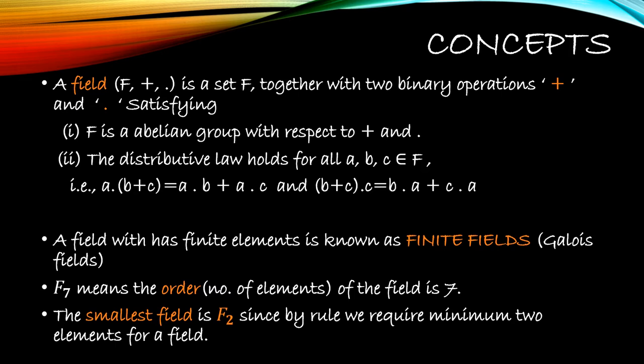Next definition: finite fields. You should understand what a field is and then we come to a finite field. A field which has finite elements — very simple. By the word itself, finite means countable. So countable elements in the set — in the field — then I can say it's a finite field. Finite fields can also be called Galois fields. So remember there's another name for finite fields: Galois fields. F7 means the order of the field is 7.